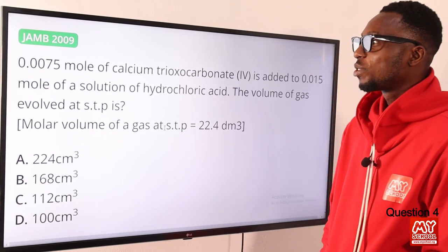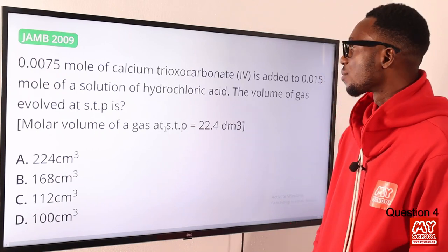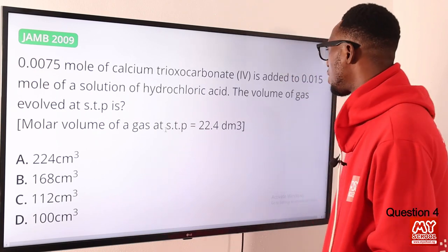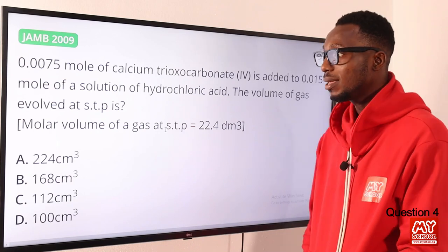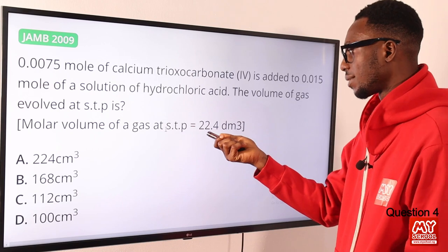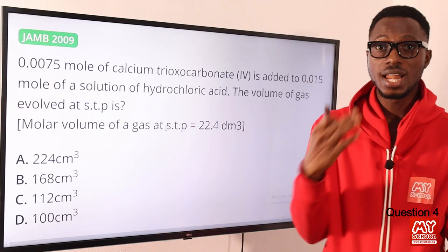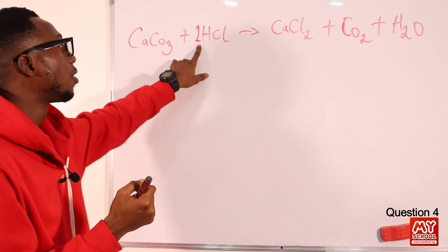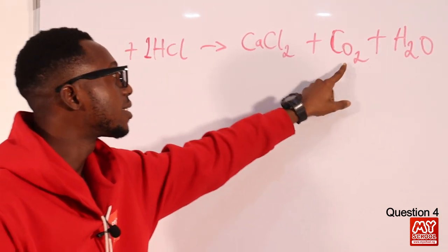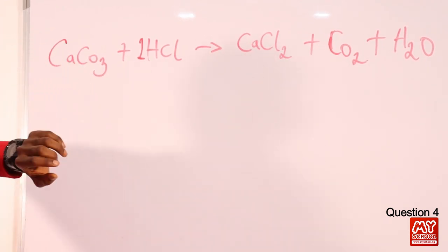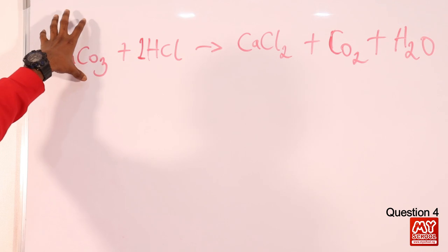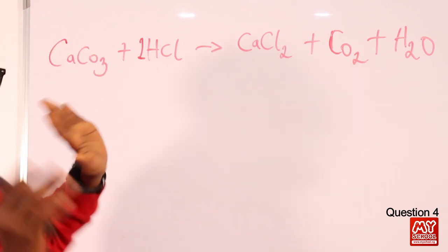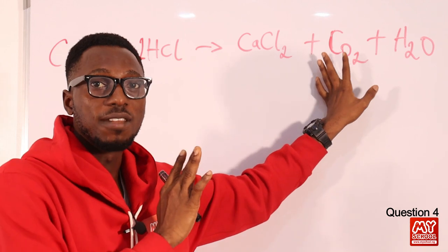Question 4: 0.0075 moles of calcium trioxocarbonate(IV) is added to 0.015 moles of hydrochloric acid. The volume of gas evolved at STP is what? The molar volume of gas at STP is given as 22.4 dm³. Looking at the equation, one mole of CaCO₃ reacts with two moles of HCl. The only gaseous product is CO₂ — one mole of CaCO₃ produces one mole of CO₂.